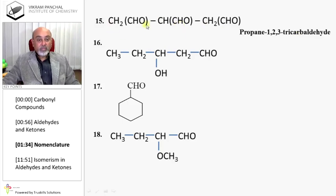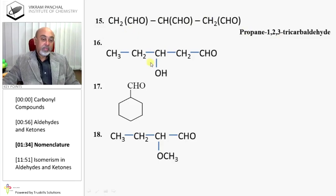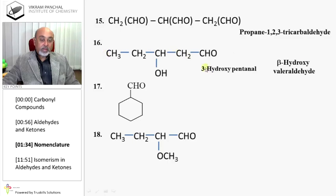So here we have one, two, and three carbons in the chain, giving propane. The first, second, and third carbons each have a CHO group, so it is 1,2,3-tricarbaldehyde. The third carbon also has an OH group, so it is 3-hydroxypentanal, or beta-hydroxyvaleraldehyde.